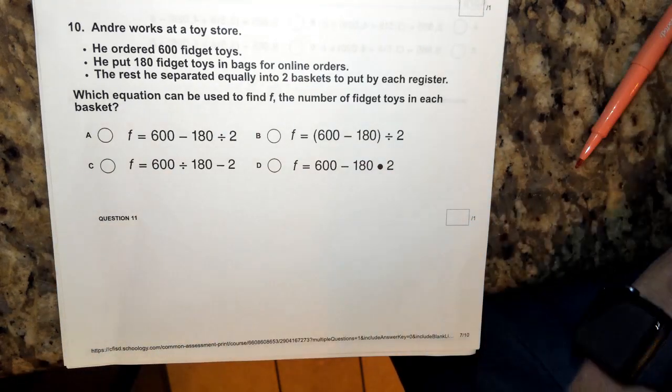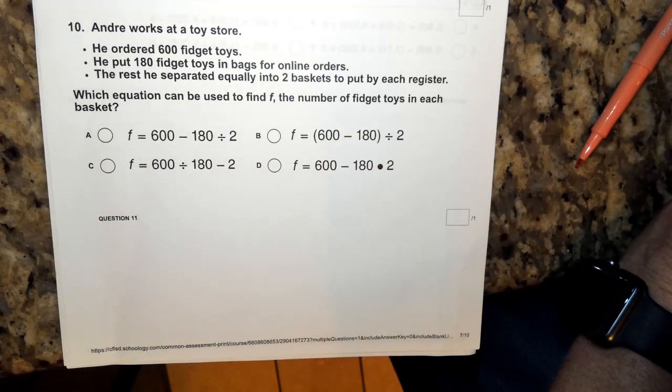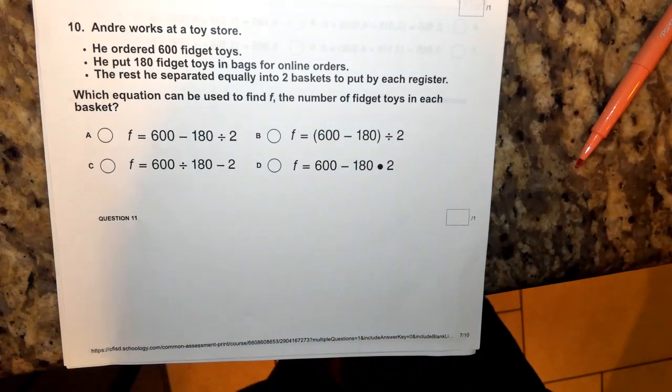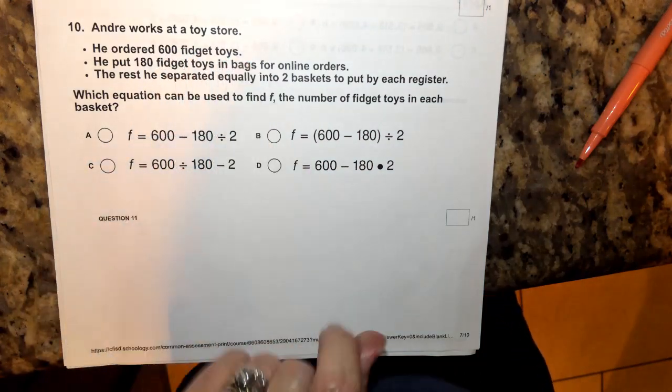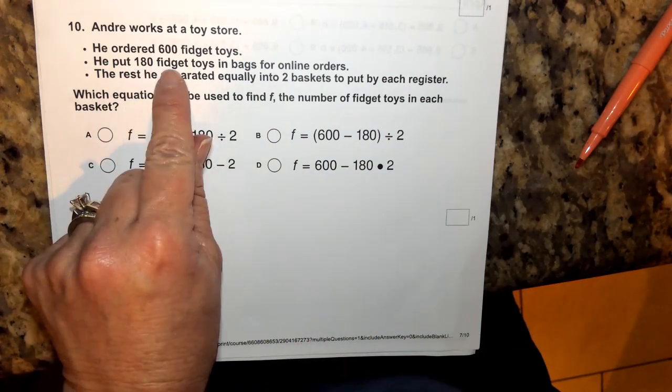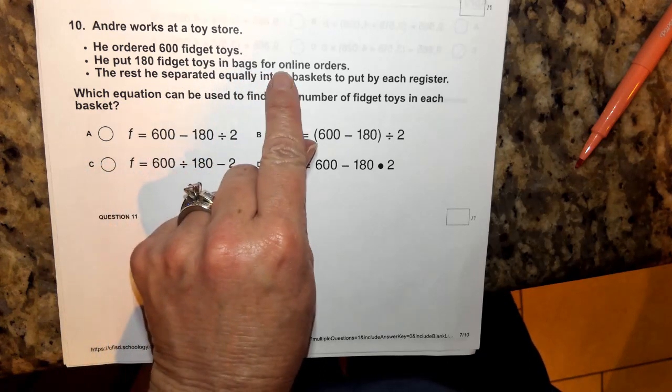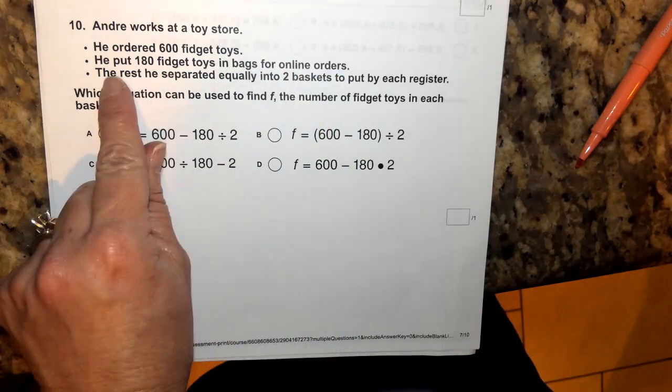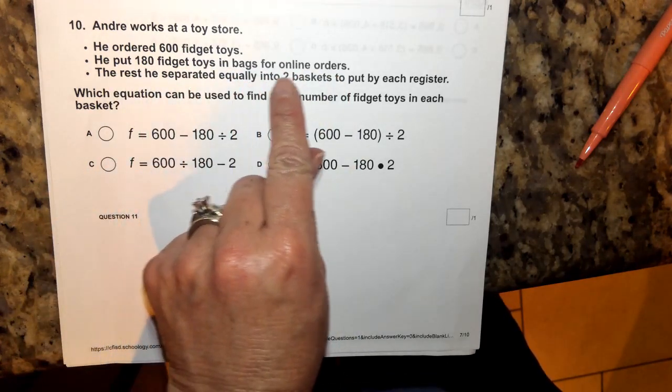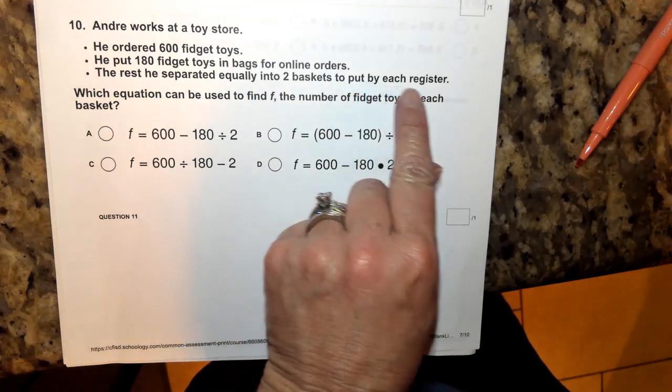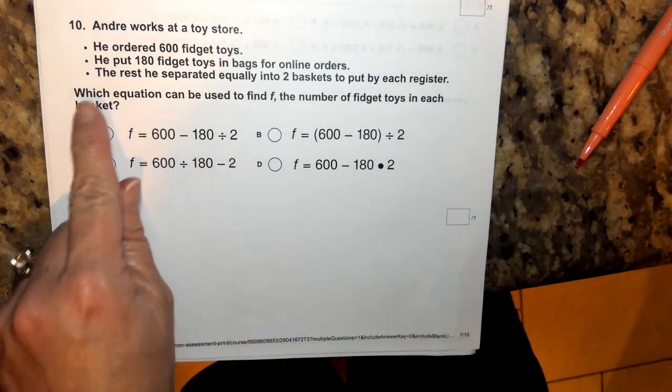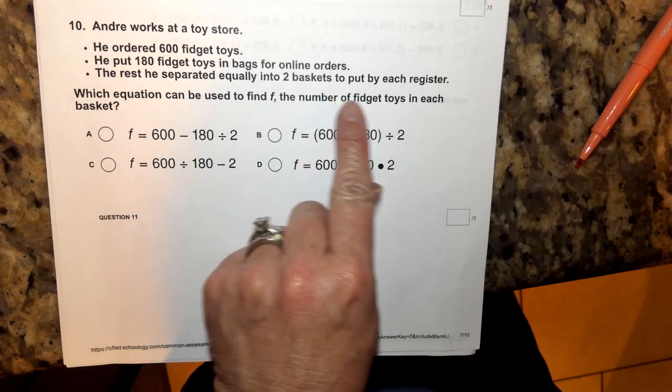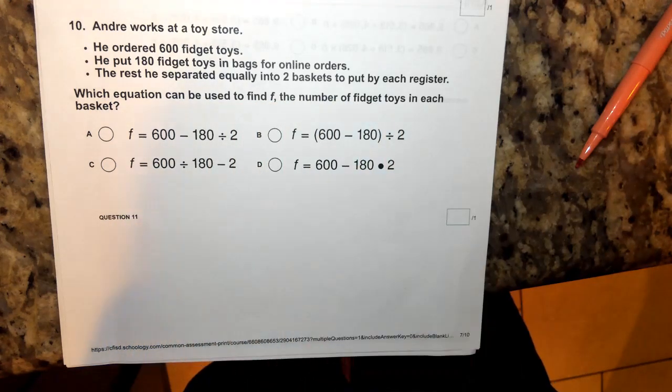Number 10. Andre works at a toy store. He ordered 600 fidget toys. He put 180 fidget toys in bags for online orders. The rest he separated equally into two baskets to put by each register. Which equation can be used to find f, the number of fidget toys in each basket?